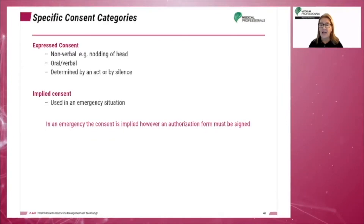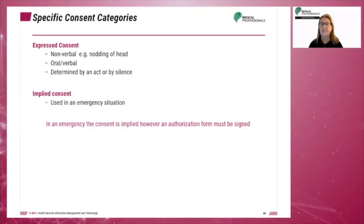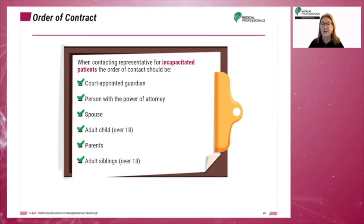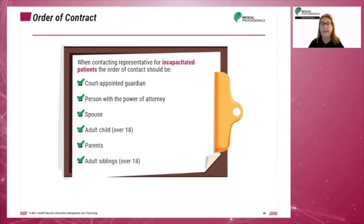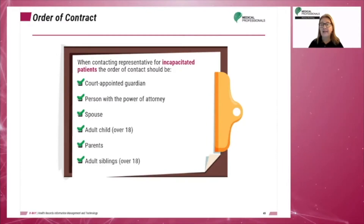The implied consent form should also be signed by two consultants from two different disciplines — a resident's signature is not acceptable. When contacting representatives for incapacitated patients, the order of contact should be as follows: court-appointed guardian, person with power of attorney, the spouse, an adult child over the age of 18, the parents, and any adult siblings over the age of 18.